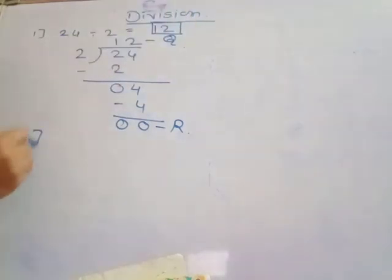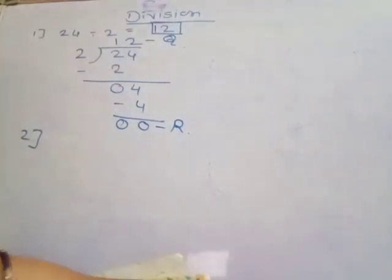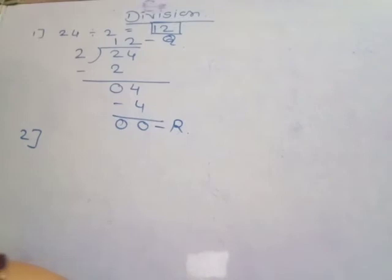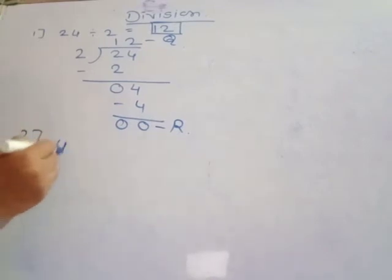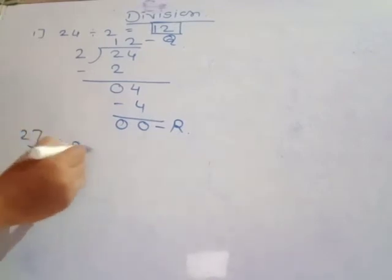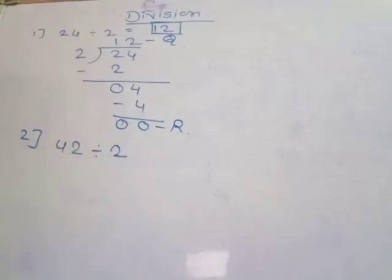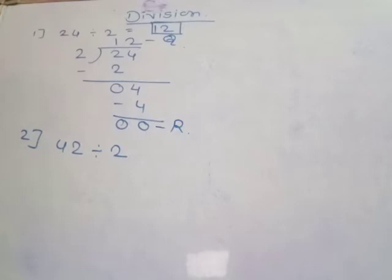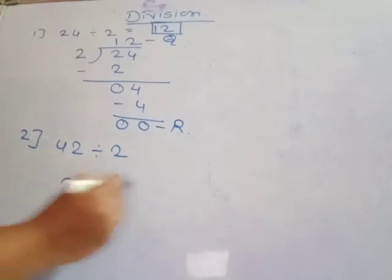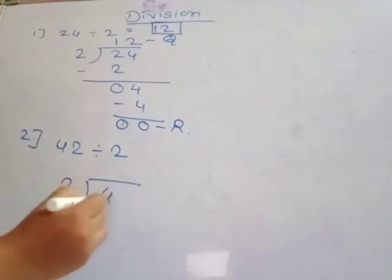Second example: 42 divided by 2. This is a two-digit number divided by the one-digit number 2.